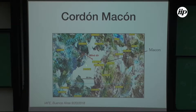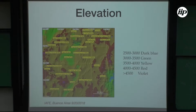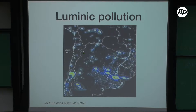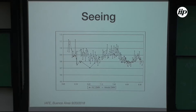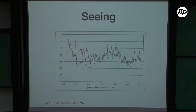Cerro Macón is near the second or third largest salt flats in the world — about 150 kilometers. The salt flats are very good for laminar wind coming from the west as it goes up the Andes. The elevation of 4,650 meters is almost 500 meters higher than Mauna Kea, one of the highest astronomical observatories on the planet. There's very low light pollution — even better than the Chilean side — and the seeing gets to 0.5 arcseconds many times throughout the year.